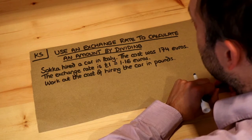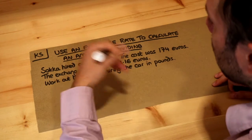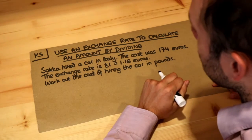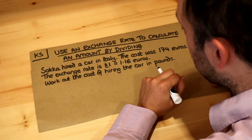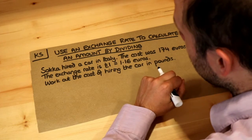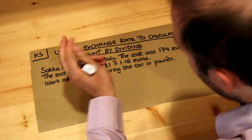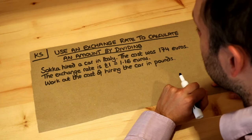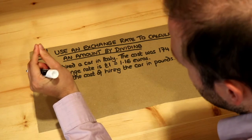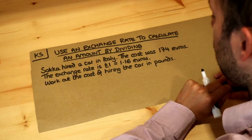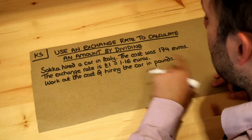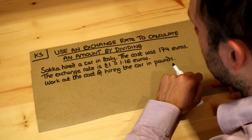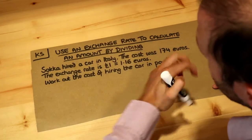What we mean by exchange rate is that when we go from one country to another we're often using a different currency. If you were in Britain you'd be using pound sterling, but if you were in France you would be using euros. There's an exchange rate to say what one pound in the UK is worth in euros — for example, one pound could be exchanged for 1.16 euros, and that rate can change day on day.